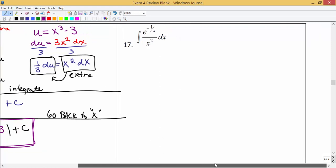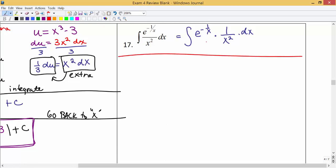Alright, for number 17, we want to figure out what are we going to let be u. Before we do that, let's write this a little bit differently. Keep in mind that this is the same thing as e to the negative 1 over x power times 1 over x squared times dx. And what we said was we're trying to let u represent the most complicated part of the expression. Or we could also look for the exponent for e if it's anything other than just x.